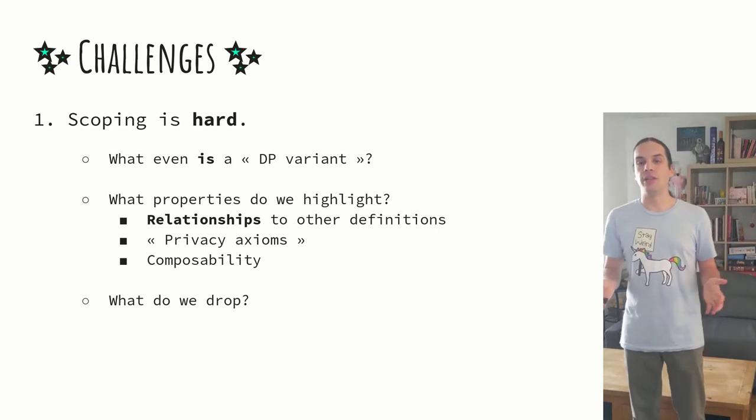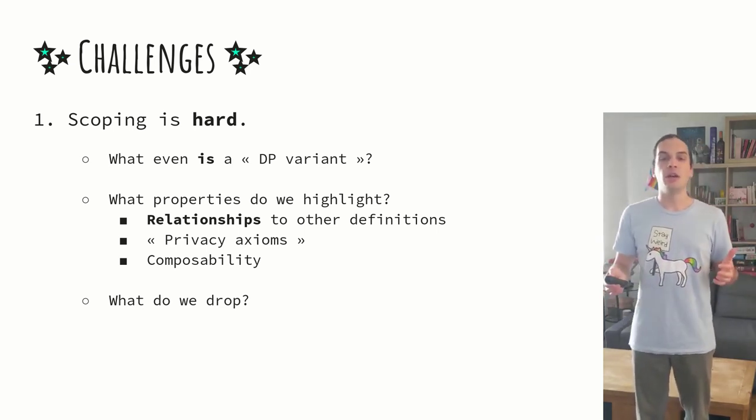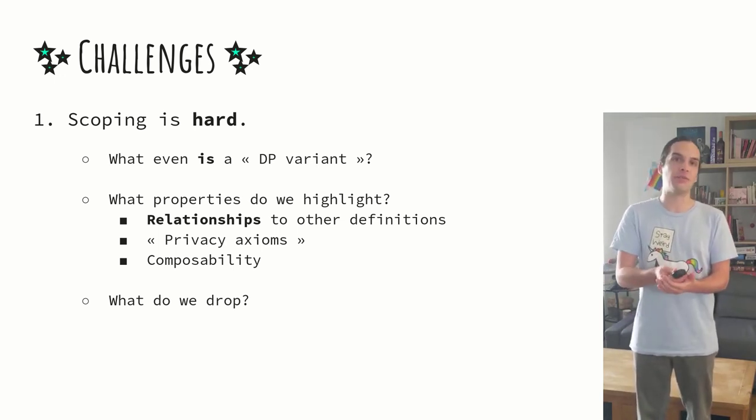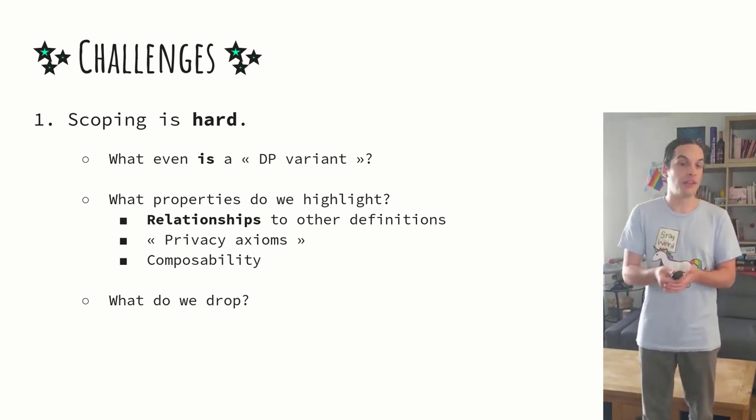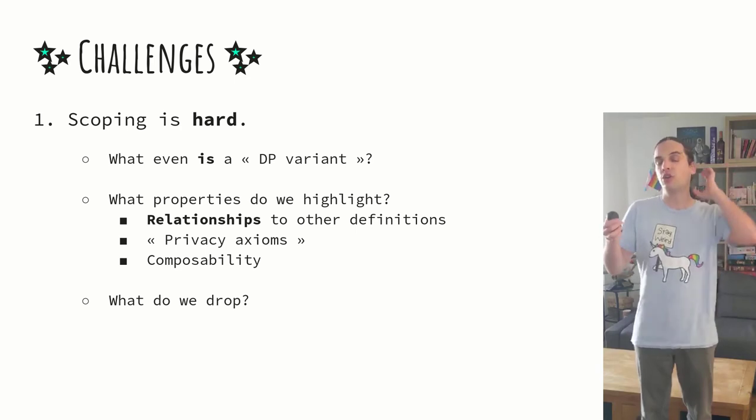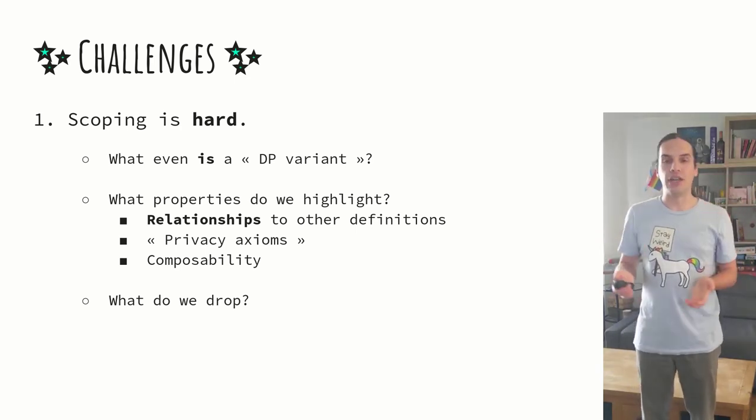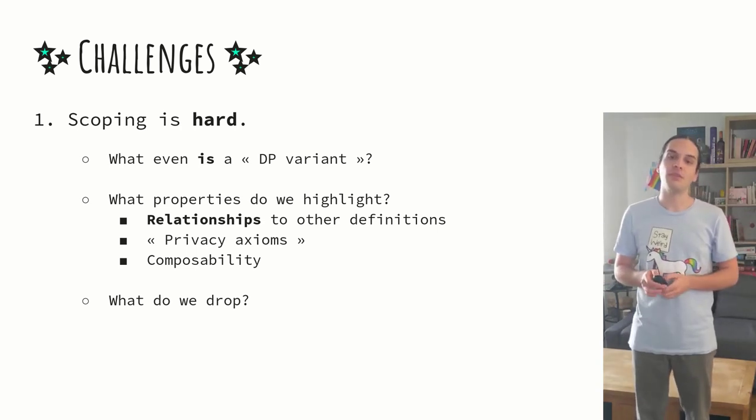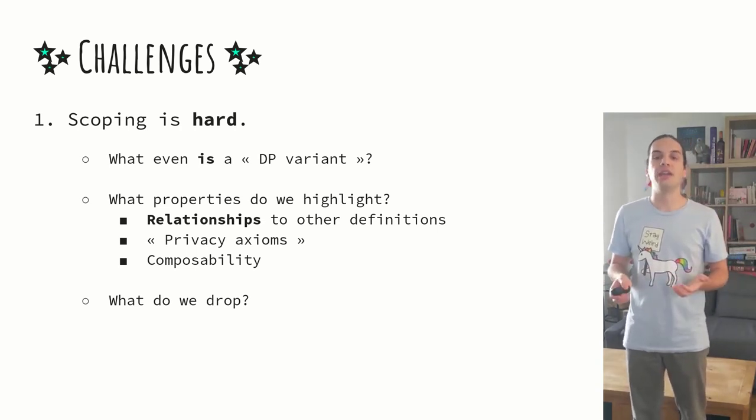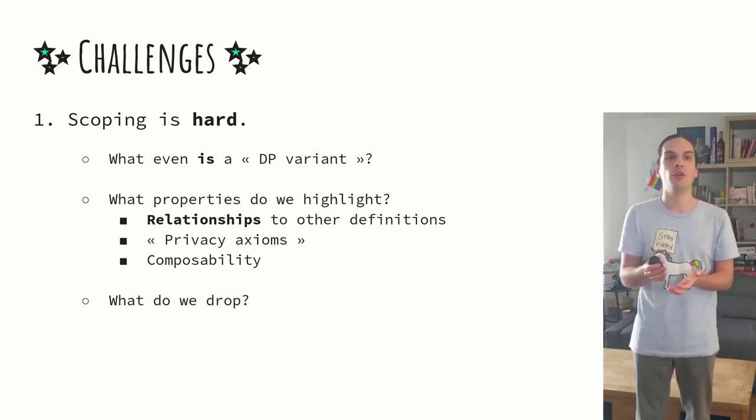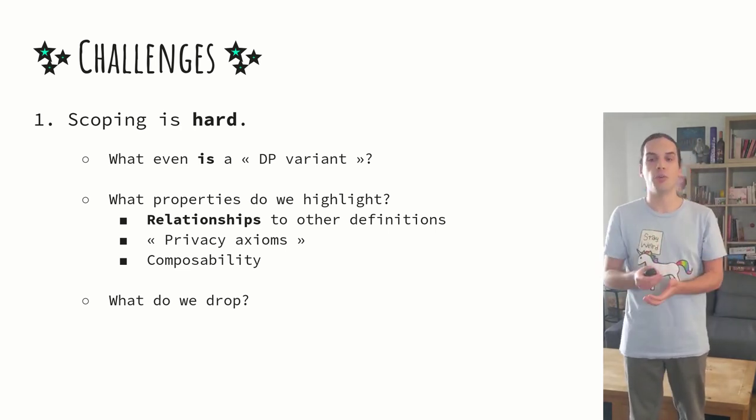Finally, you have to draw a line somewhere. For example, for composition, we thought it would be nice to research what is the best composition result out there for a given definition. Or is this enough to simply say that a composition result exists with some change in parameters? We settled on the latter. We also didn't go into too much detail about the context in which definitions are applied, like contrasting the local versus global model of differential privacy.